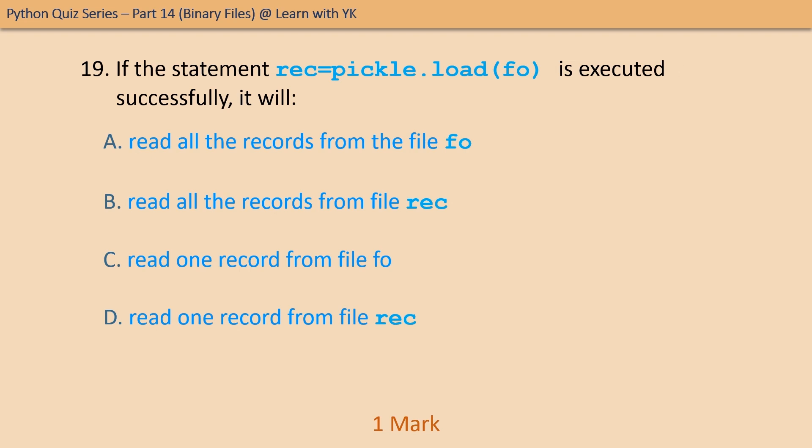Question number nineteen: if the statement rec = pickle.load(fo) is executed successfully, what will it do? Pick the correct option. The correct option is option C — it will read one record from the file fo.